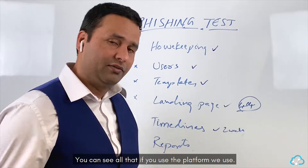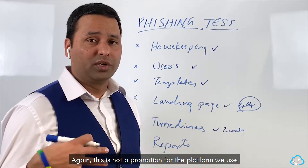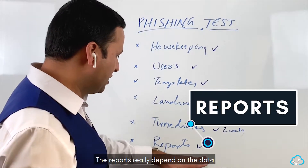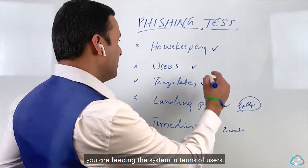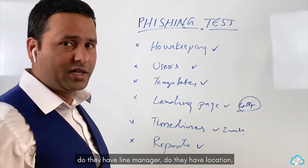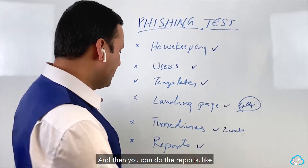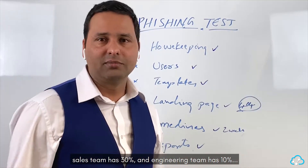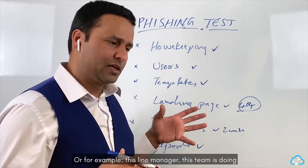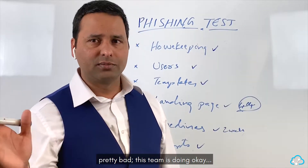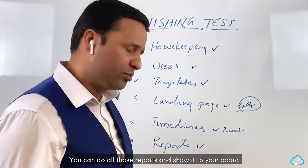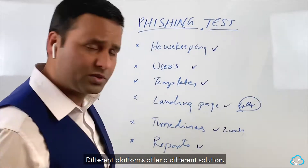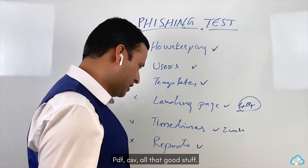You can see all the reports: how many people opened it, how many clicked on the link, how many opened the attachment, how many entered their credentials on a login page. Make sure users have department, line manager, and location data so you can run detailed reports — for example, the finance team has a 25% click rate, sales has 30%, engineering has 10%. You can show all of this to your board.